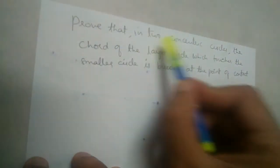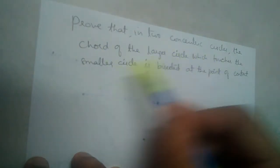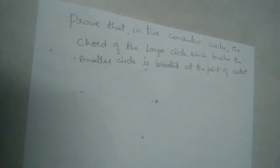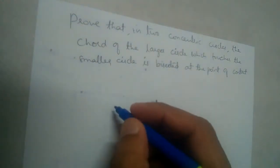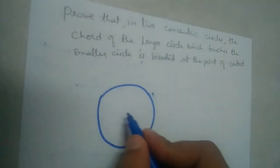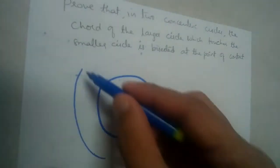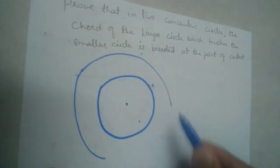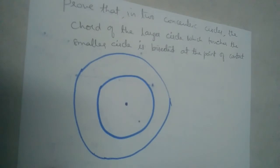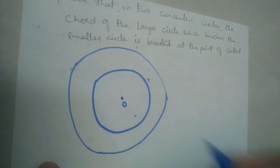Prove that in two concentric circles, the chord of the larger circle which touches the smaller circle is bisected at the point of contact. There are two concentric circles — concentric circles have the same center. Suppose this is one circle with center O, and let us draw a bigger circle with the same center. These are two concentric circles; let the center be O.